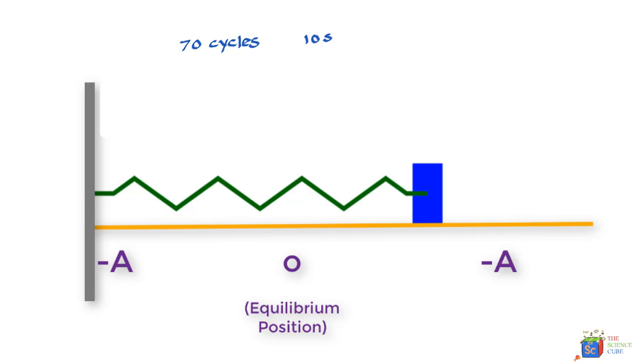Now if you ask what is the time period of this mass that is doing 70 cycles in 10 seconds, you can say that the time taken to complete one cycle, which is the time period, is 10 seconds upon 70 cycles. If you calculate this, it comes to something like 0.143 seconds per cycle. So that is the time period.